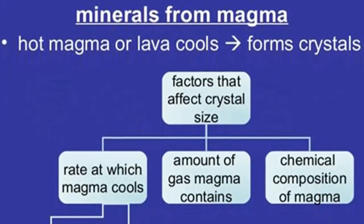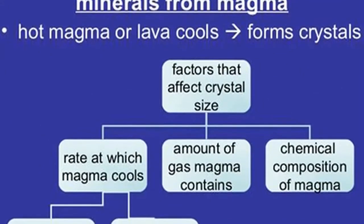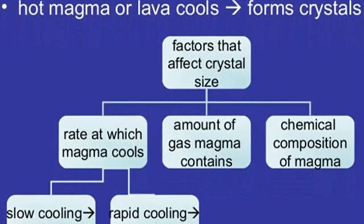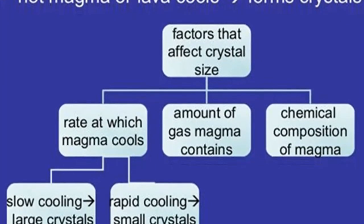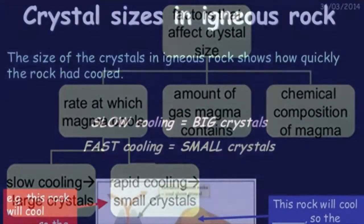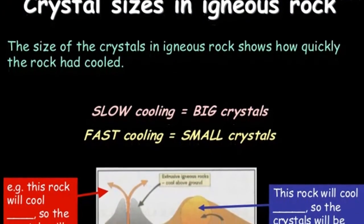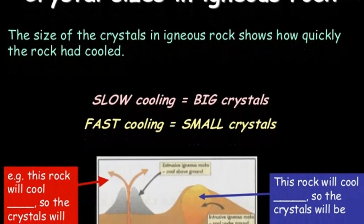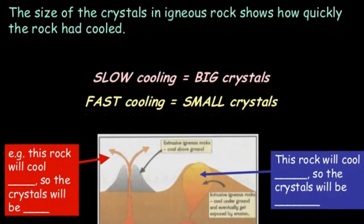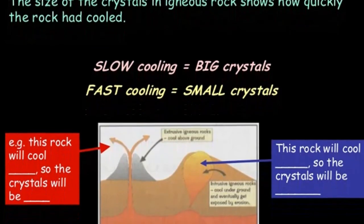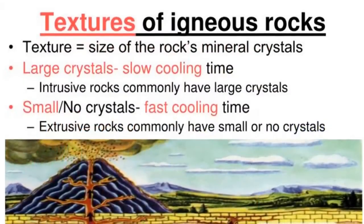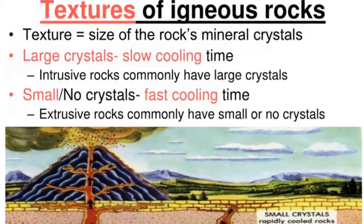As a magma body loses heat to its surroundings, the mobility of its ions decreases. A very large magma body located at great depths will cool over a period of perhaps tens or hundreds of thousands of years. Initially, relatively few crystal nuclei form. Slow cooling permits ions to migrate freely until they eventually join one of the existing crystalline structures. Consequently, slow cooling promotes the growth of fewer but larger crystals.